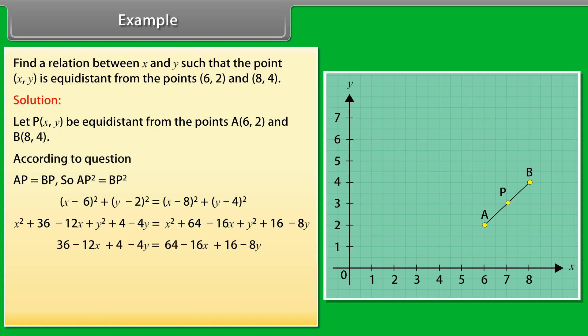36 minus 12X plus 4 minus 4Y equals 64 minus 16X plus 16 minus 8Y, which becomes minus 12X minus 4Y plus 16X plus 8Y equals 64 plus 16 minus 4 minus 36. 4X plus 4Y is equal to 40, which is equal to X plus Y equals 10.